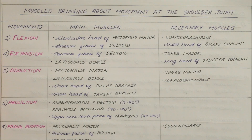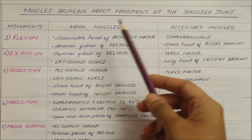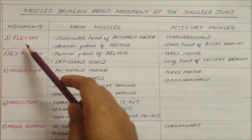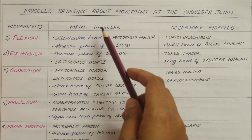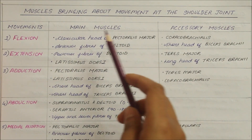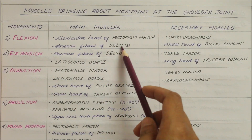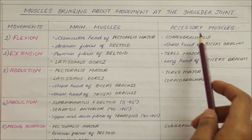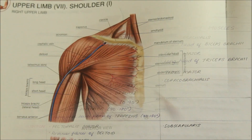This is the mid-flexed position of the elbow — this is medial rotation and this is lateral rotation. Now let's look at the muscles which bring about movement at the shoulder joint. The main muscles involved in flexion are the clavicular head of the pectoralis major and the anterior fibers of the deltoid; accessory muscles are the coracobrachialis and the short head of the biceps brachii.